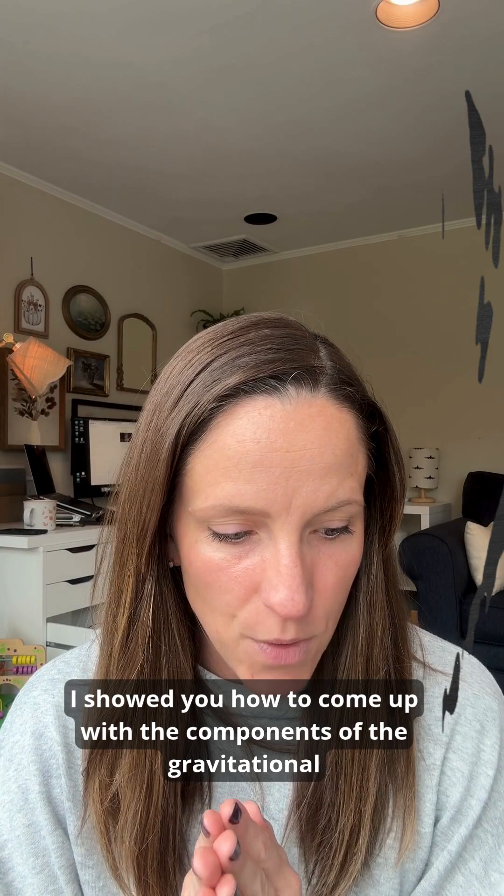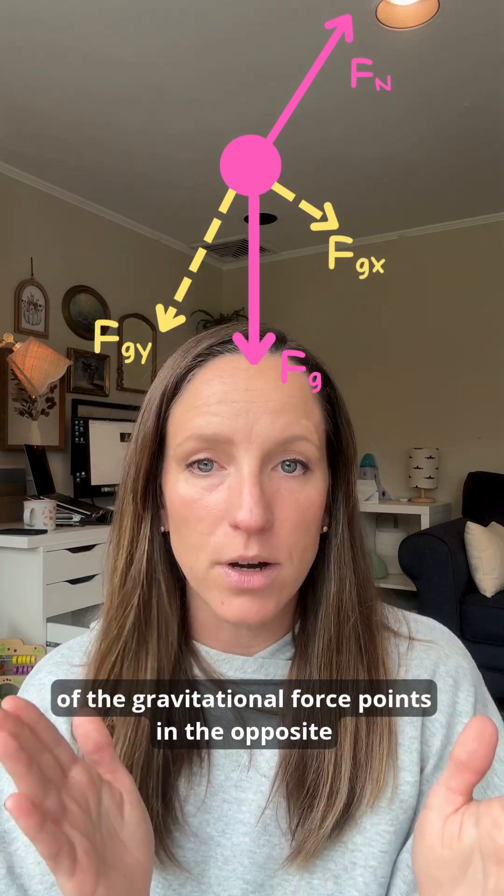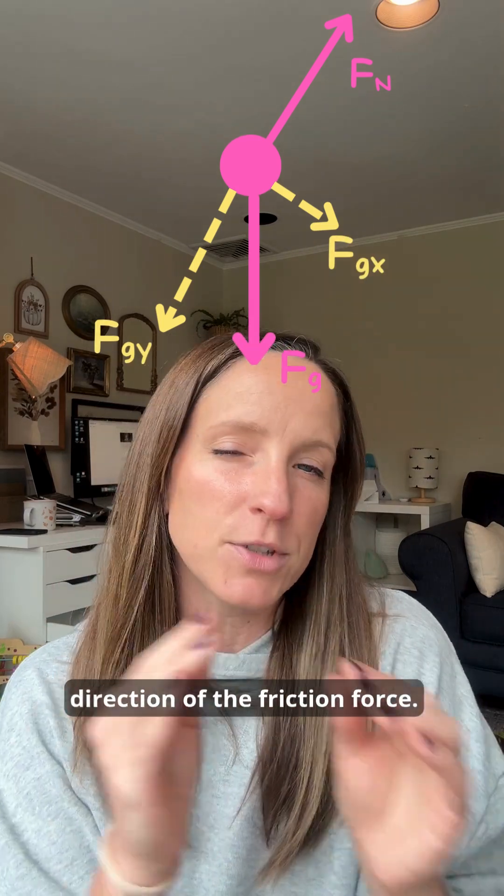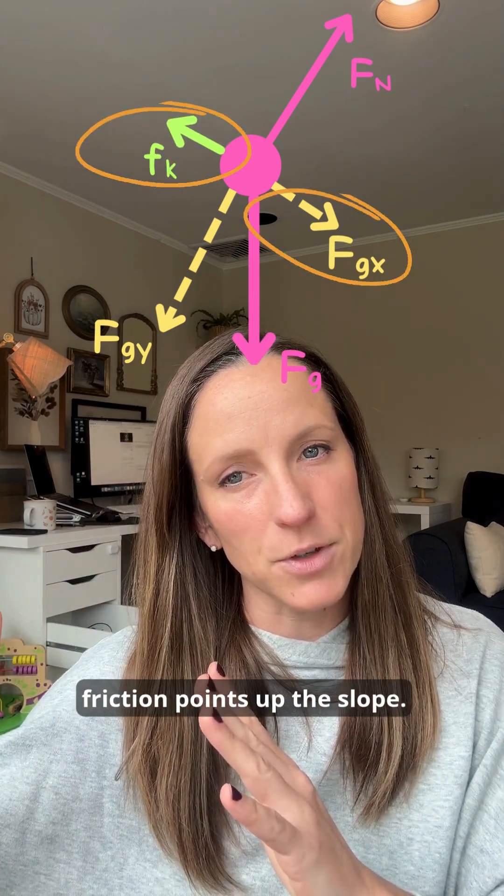So in my last video, I showed you how to come up with the components of the gravitational force. And what we learned there is that our x component of the gravitational force points in the opposite direction of the friction force. So that x component of gravity points down the slope, friction points up the slope.